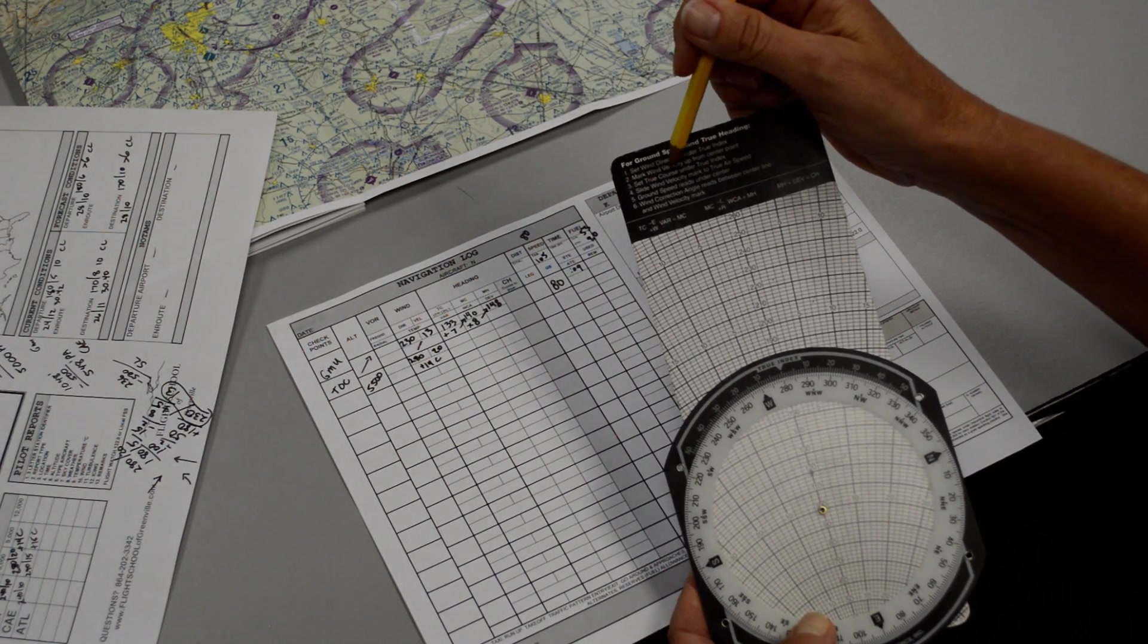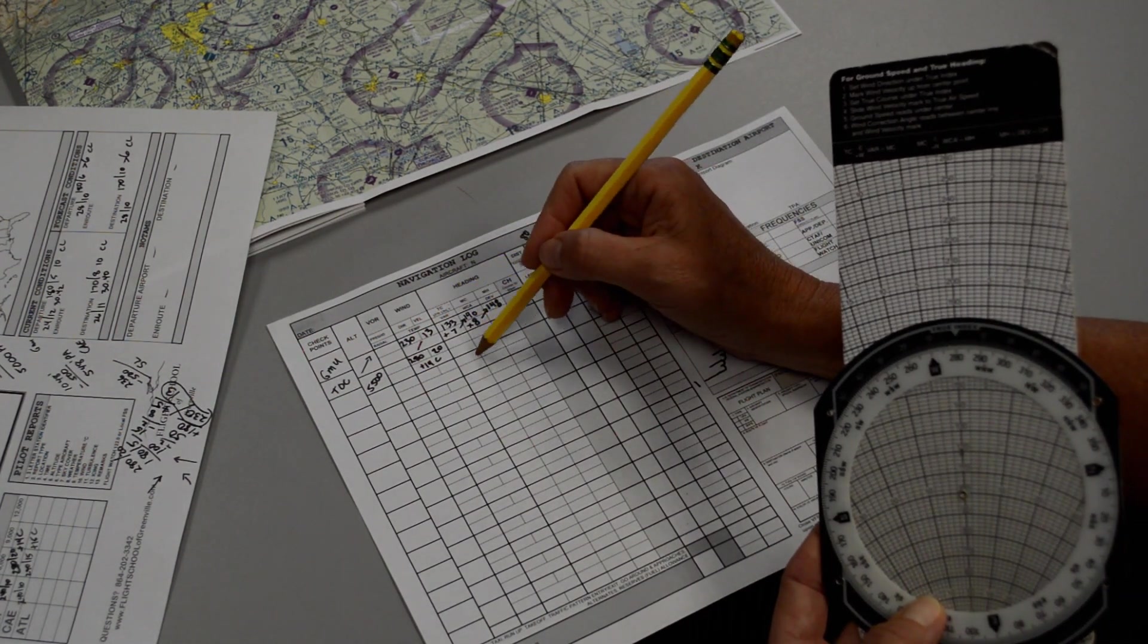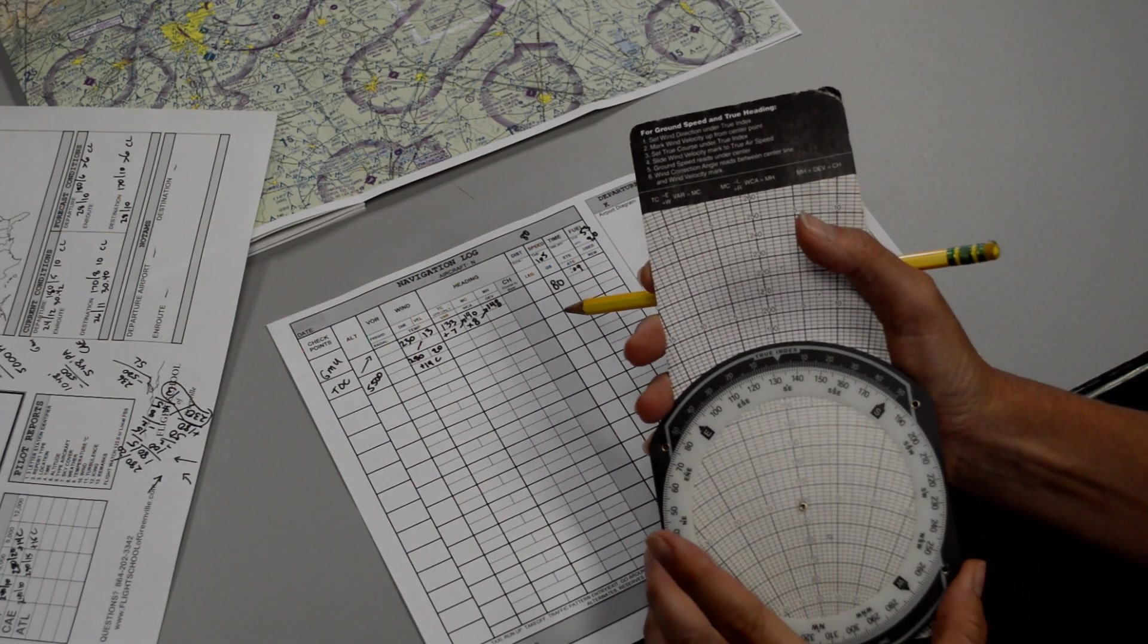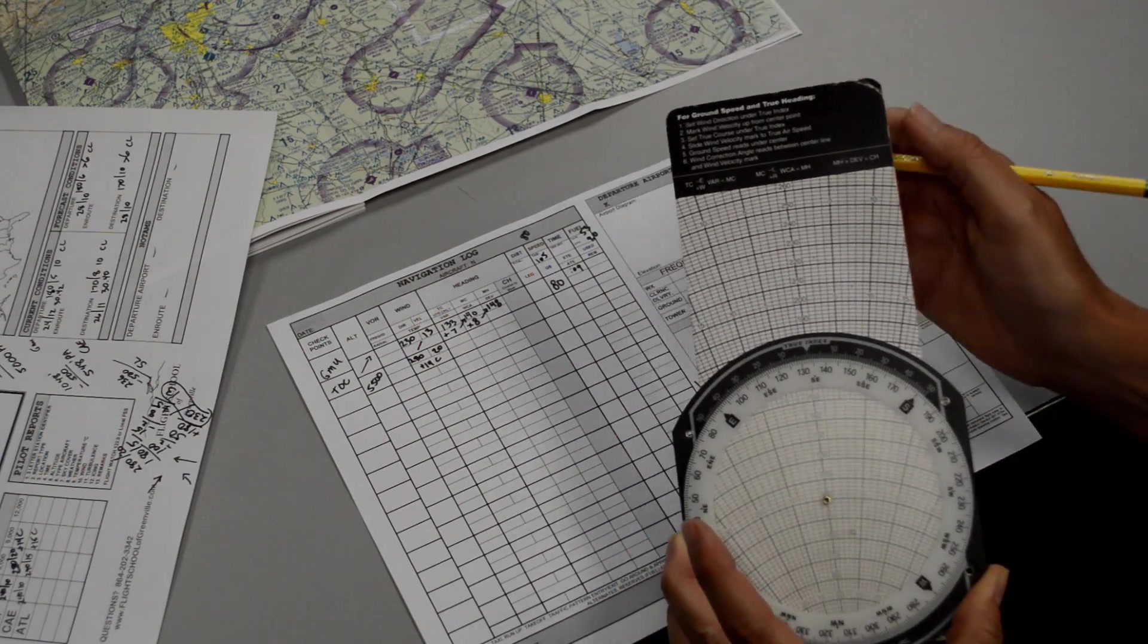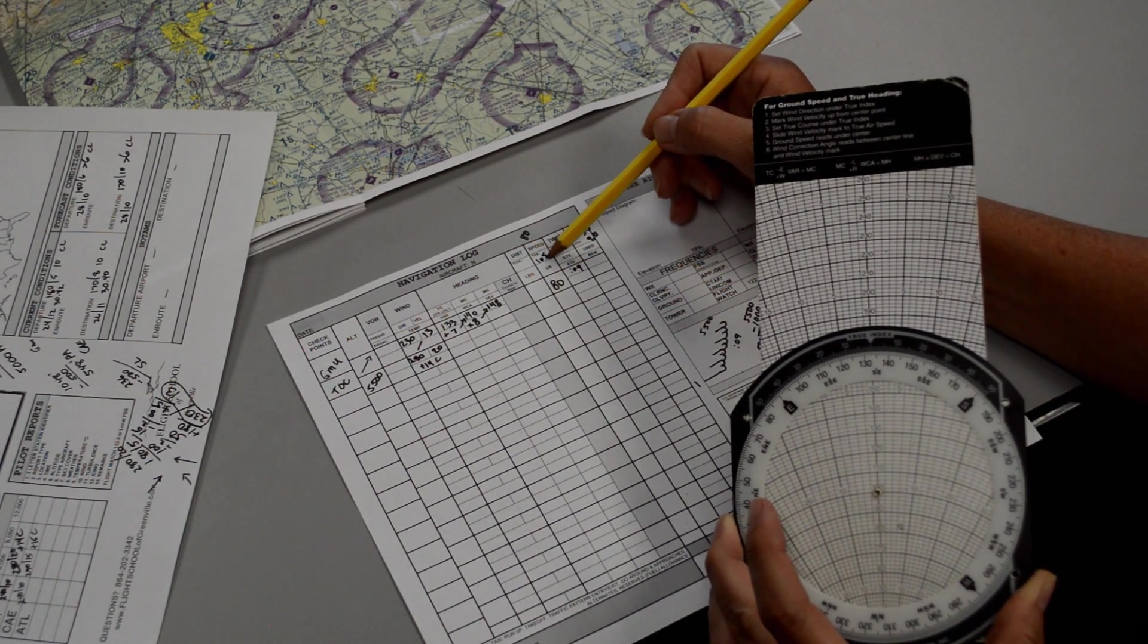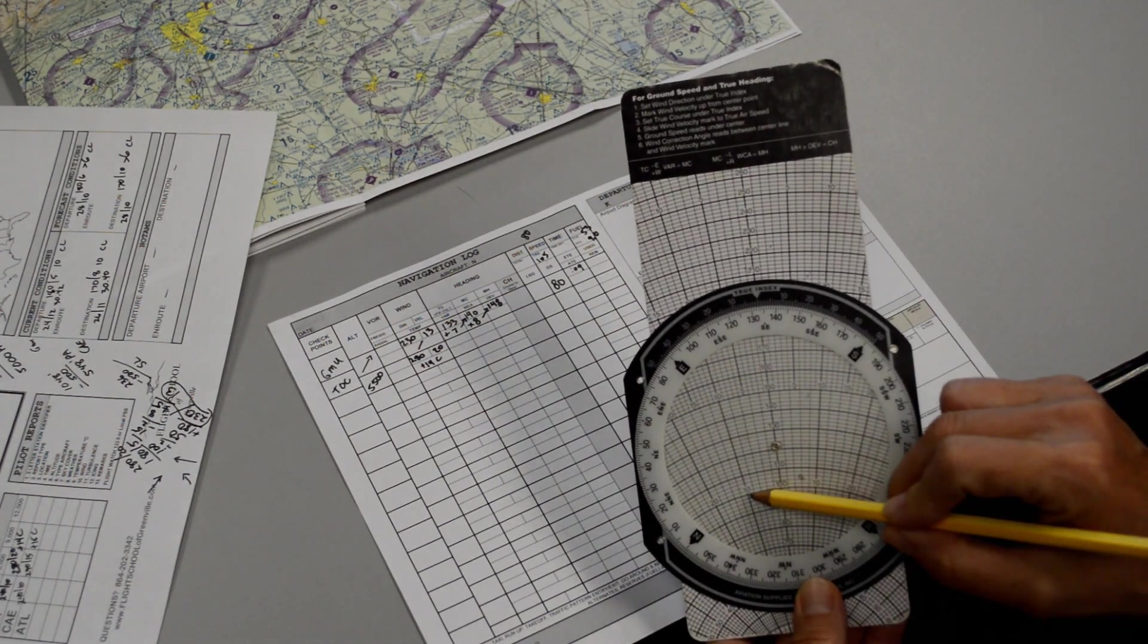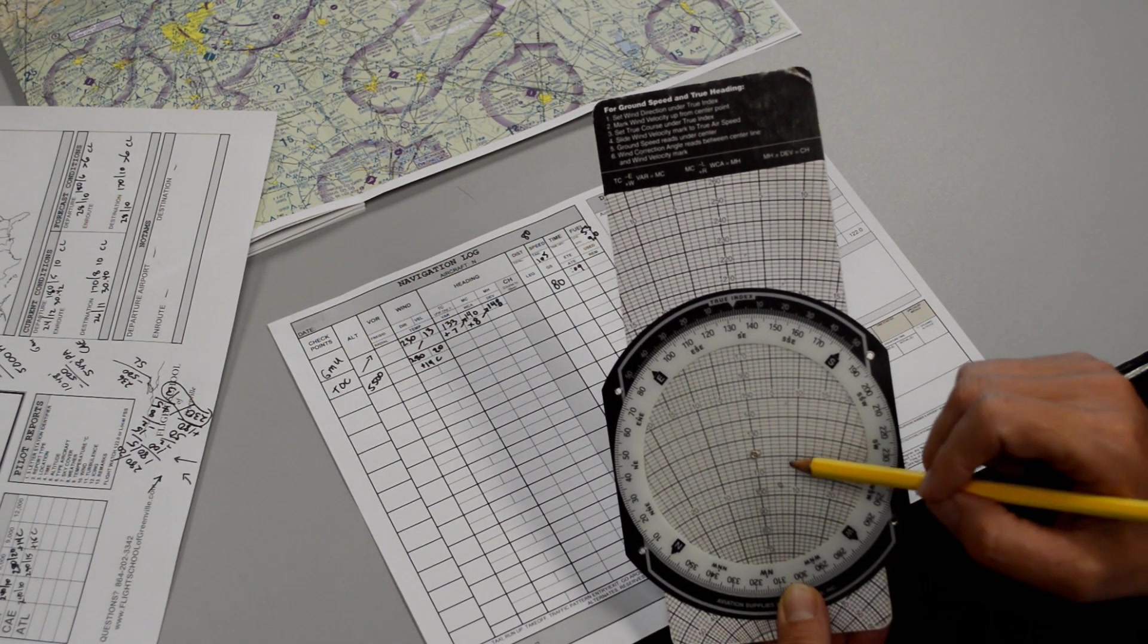Number 3 says set true course under true index. Well, our true course is going to remain the same for the whole flight, hopefully, because we're just flying a direct line there. So the true course is still 130. So I spin this around to 130. Correction, 133. Sorry about that. So 133. Number 4 says slide the wind velocity mark, that's the pencil mark you made, to true airspeed. Our true airspeed for the cruise portion was 105. Remember, we pulled this number off the cruise performance chart out of the POH. So we're going to slide our pencil mark now up to 105. With the pencil mark, this is 100, 110, and so on. So 105 is going to be halfway between these two. And now two bits of information are revealed.